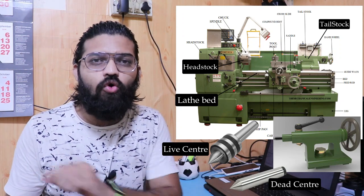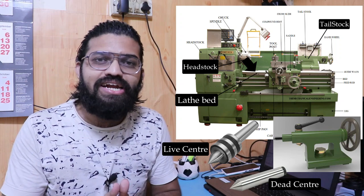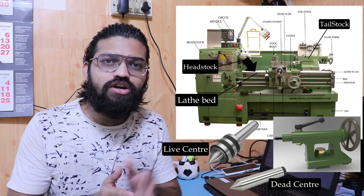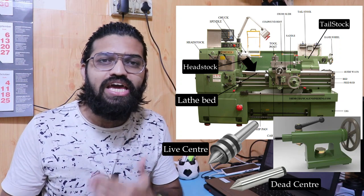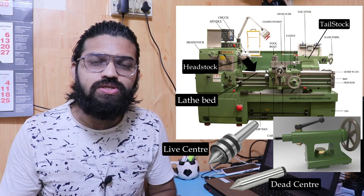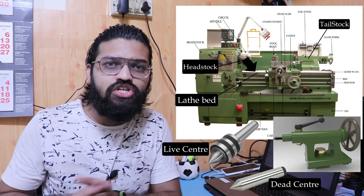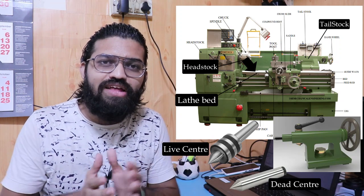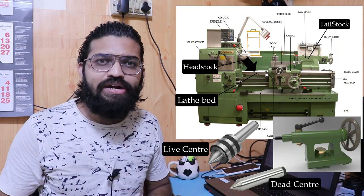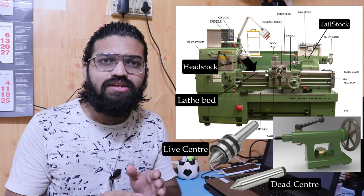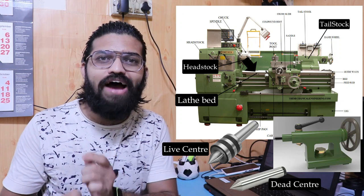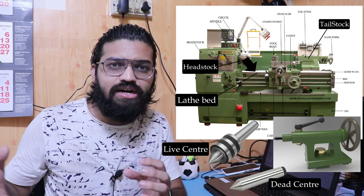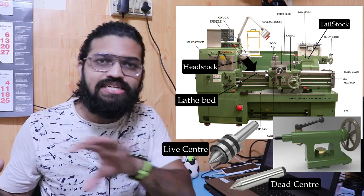The live center and dead center are used to support the workpiece while carrying out different operations, including knurling. Both the carriage unit and the tailstock unit slide over the lathe bed, so the lathe bed material must have high toughness — it should not deflect under heavy load and should not produce vibrations. The lathe bed is made of cast iron alloyed with chromium and nickel, giving it a super-finished surface so the tailstock and carriage can easily slide over it.